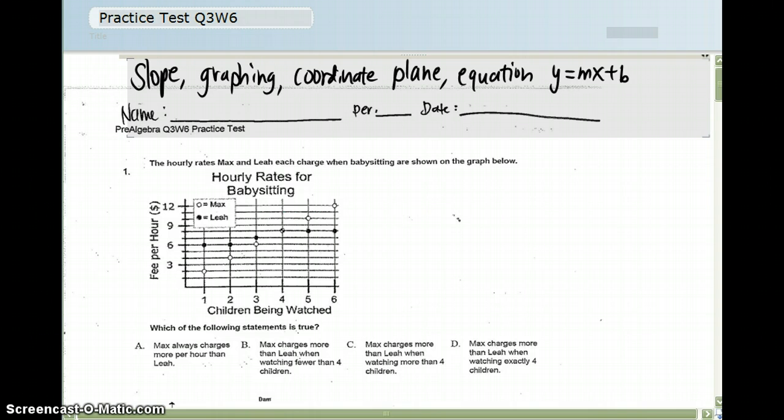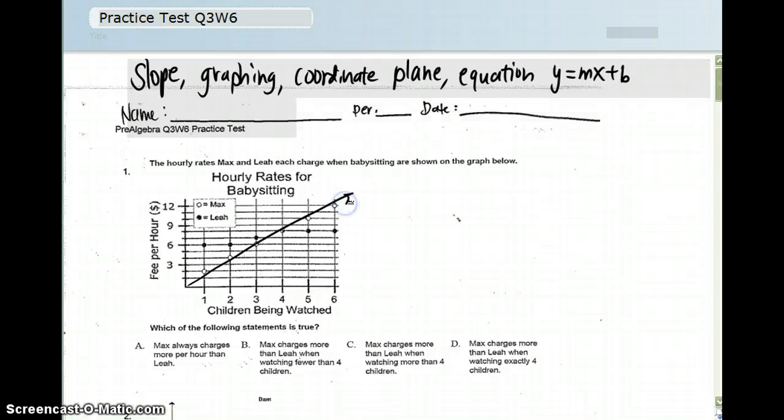The test will be on Monday. Number one, based on the graph, we can see that this line right here represents Max and how much he charges, and then the dots represent how much Leah is charging for babysitting. Right here is where Max starts to charge more than Leah, so the answer to that one will be C.